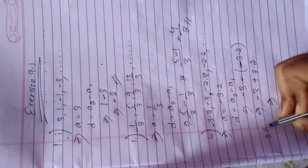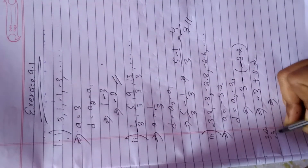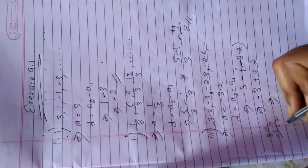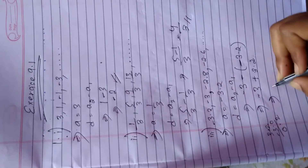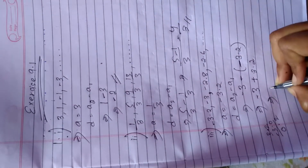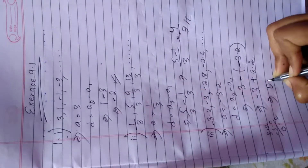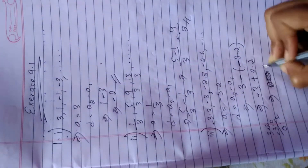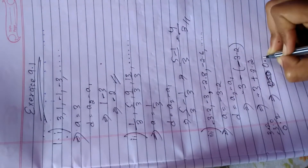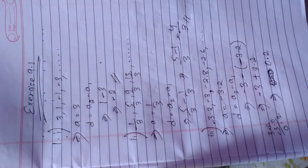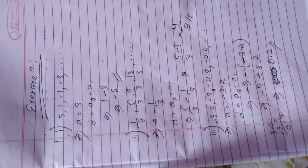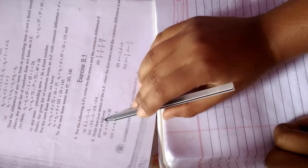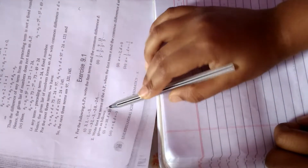The common difference is -3 minus (-3.2), which is 0.2. So this is the answer: d is 0.2. Now let's begin with Question 2: write the first four terms of the AP when the first term a and common difference d are given.